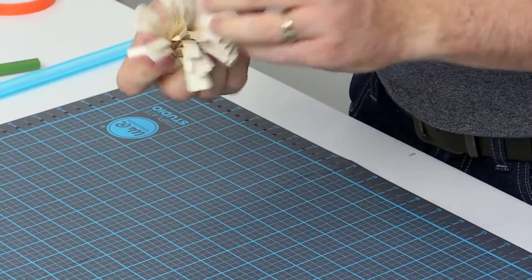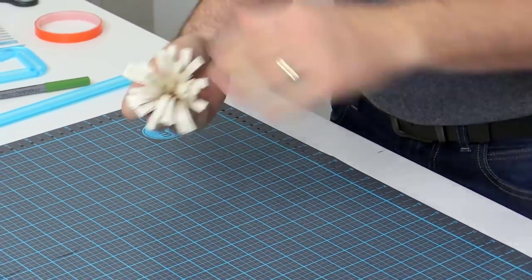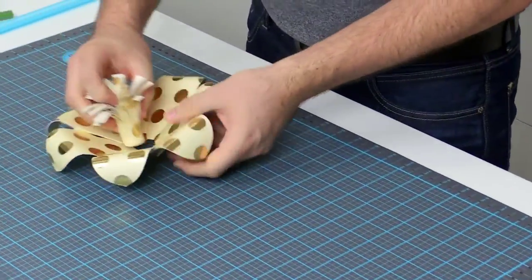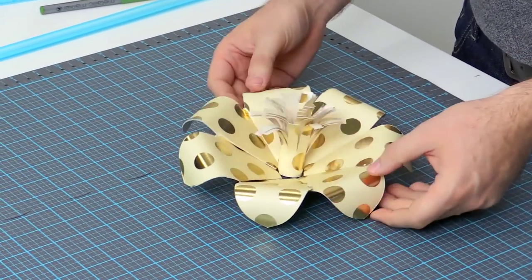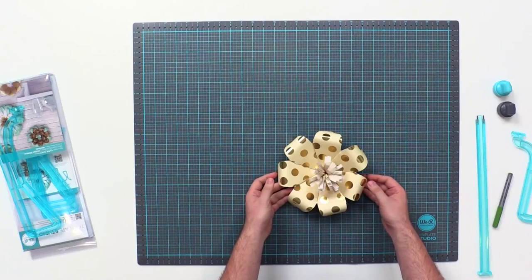Mess it up a little bit just to give some dimension there. Then we can come in and we can place it there in the center. And there we have our finished flower.